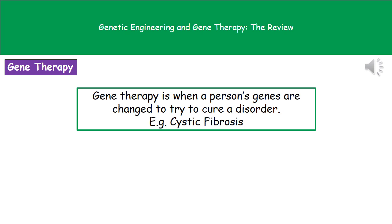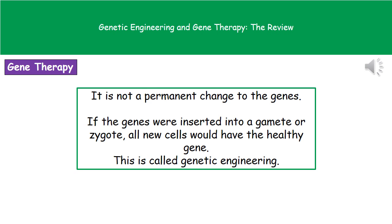The second thing we're going to look at is gene therapy. This is where we're actually going to change a person's genes to try to cure a disorder, and the best example of where they're trying this is in cystic fibrosis. The thing to remember though is that in gene therapy, we're not making permanent changes to the genes — it's only temporary. If, however, we were able to insert these genes into the gamete or the zygote, then all of the new cells would have the healthy gene. That is, however, genetic engineering, not gene therapy. Gene therapy is a temporary change; genetic engineering is that permanent change in all of those cells.